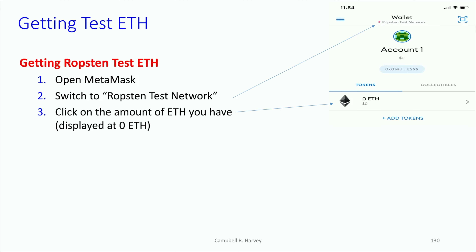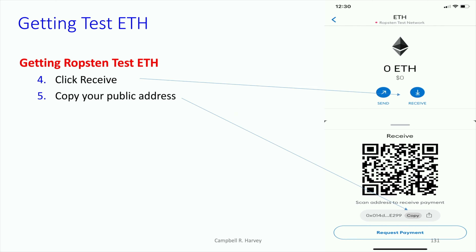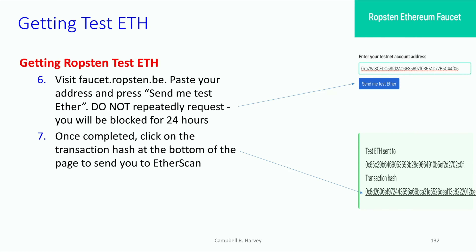The next thing is we need to get some test ether. Open the MetaMask wallet, switch to the testnet, click on the amount of ether you have (which is zero), and then click receive and copy your public address. Then go to the website faucet.ropsten.be, paste your address in, and request some ether. Don't do this a lot — do it for a modest amount. If you keep doing it, you're taking advantage of the system and you might be blocked. You don't need that much to start things off.